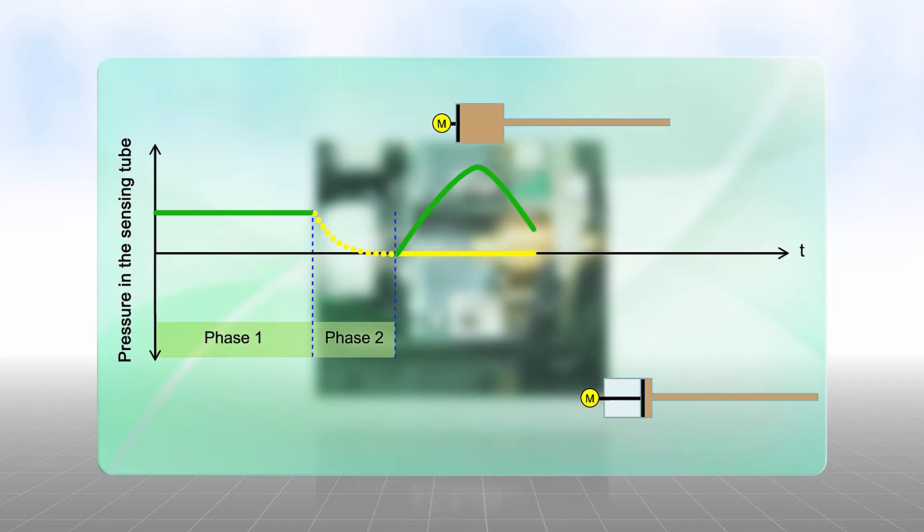The fully automatic sensing tube monitoring detects any errors, regardless of how improbable they might be. If there is a suspicion of a leak and at specific intervals, a monitoring device generates a defined overpressure in the sensing tube.